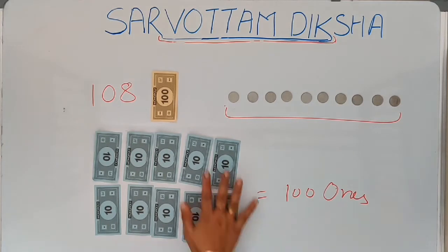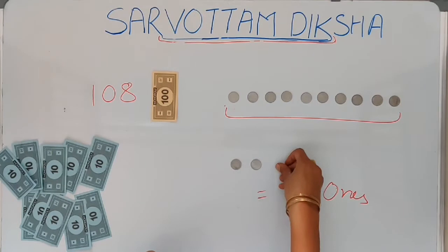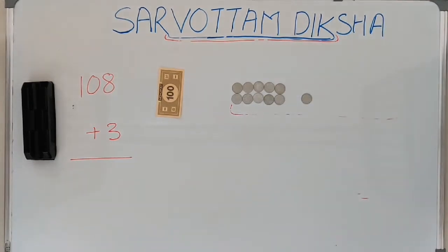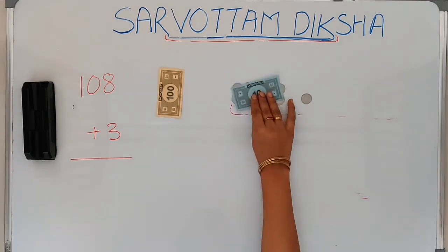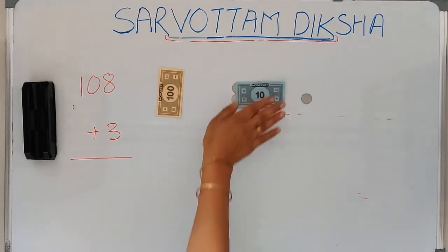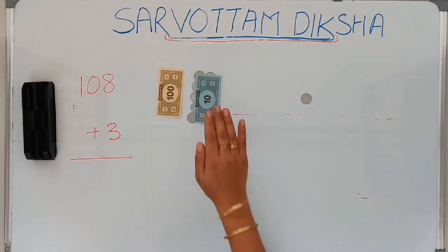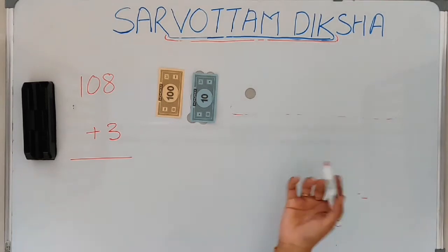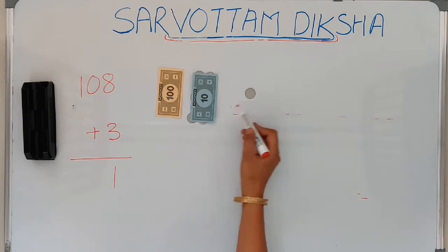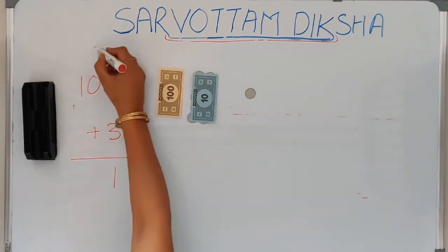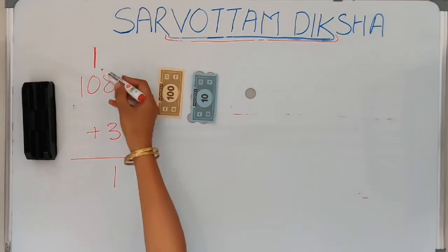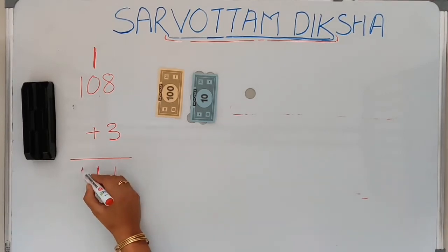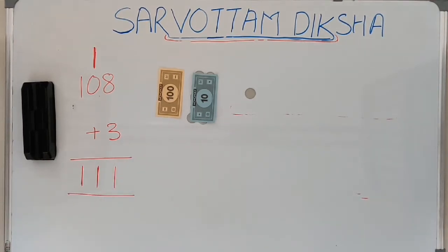Now if I add 3 ones to it — that's 3 ones to 8 ones — we know that whenever I have a set of 10 ones, I have to replace it with 1 ten. And this 1 ten, being a 2-digit number, comes on my second place. So what am I left with? I am left with 1 one. My 10 ones formed 1 ten, and this was my carry over. This 1 ten has come to the tens place, and we have 1 ten. The hundred is present as it is.